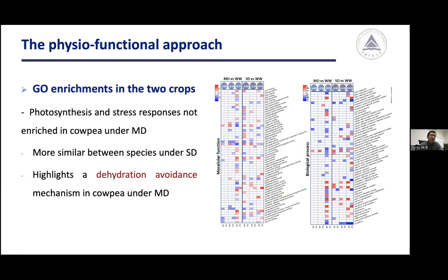Gene ontology enrichment analysis showed that photosynthesis and stress responses were enriched in soybean but not in cowpea under mild drought. As soil drought became more severe, the GO enrichment patterns became more similar between the two species. These results highlight a dehydration avoidance mechanism in cowpea under mild drought, consistent with the physiologically water-conservative traits in cowpea, because this water conservation leads to less water loss and less perturbed leaf water status.